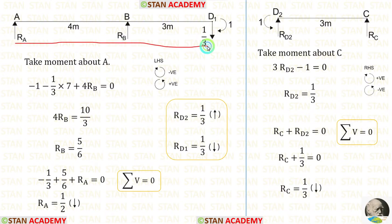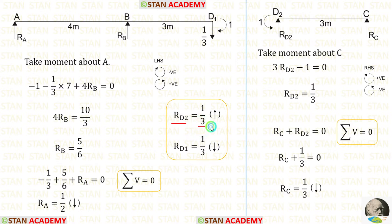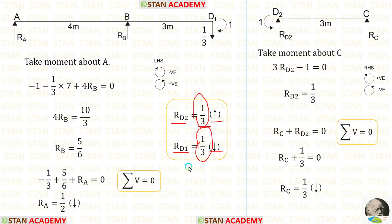Now let us take AD1 and calculate the vertical reactions. In the previous step, we have calculated RD2, so we can easily calculate RD1. The values of RD2 and RD1 will be the same, but they will be acting in different directions. For RD2, we got a positive value, meaning it is acting upwards, so RD1 should be acting downwards. Using this concept, we can calculate RD1.